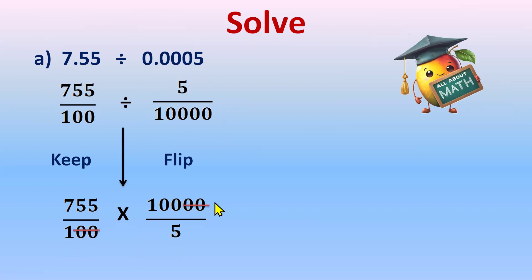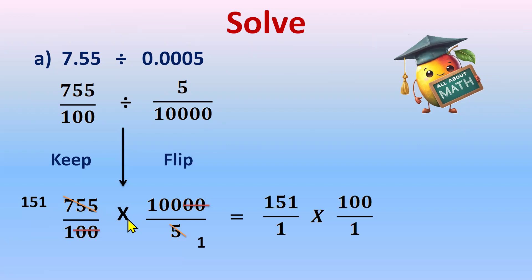Now do the cross-cancellation. Cut the two zeros from 100 with two zeros from 10,000, leaving 101. Then 5 and 755 can both be divided by 5: 755 divided by 5 equals 151. So we are left with 151 over 1. Multiplying 100 by 1 gives 151 with two zeros — that is 15,100. So after dividing these decimals, we get the answer 15,100.